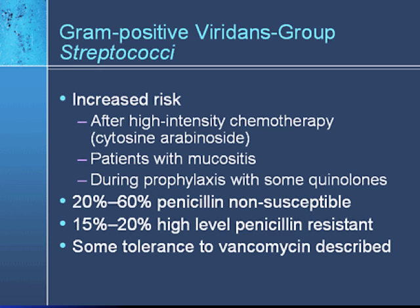Regarding Strep viridans: increased incidence is associated with risk factors including high-risk chemotherapy such as induction chemotherapy, patients with mucositis, and patients who have been previously on quinolones. Levaquin should technically provide some coverage for Strep viridans, but since these patients have been exposed so much to quinolones for prophylaxis, Strep viridans that breaks through will likely be resistant to quinolones. Up to 20 to 60% of Strep viridans may be non-susceptible to penicillin, with high-level penicillin resistance in 20%, and there is even some tolerance to vancomycin.